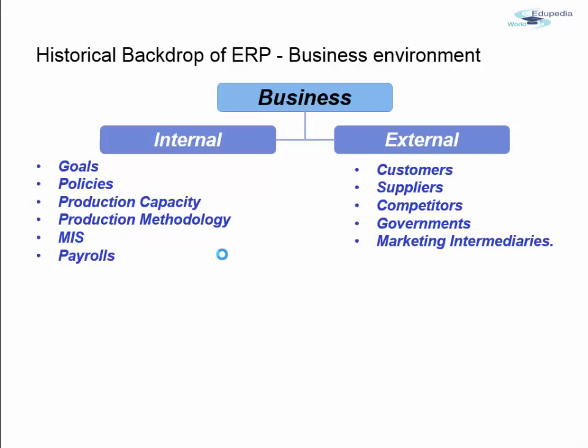When examining internal factors, we ask: What are the goals of my company? What policies do I follow? What is my production capacity — am I a domestic or international business? Do I have plants within the country or across the globe? What is my production methodology — do I rapidly change my machines, or use conventional machinery? What is the information flow within my system, and what payroll do my employees receive?